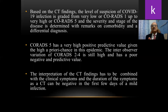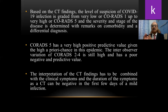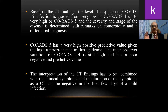Based on the CT findings, the level of suspicion of COVID-19 infection is graded from very low as seen in CORADS 1 up to very high in CORADS 5. CORADS 5 has a very high positive predictive index and CORADS 1 is almost negative except in a few exceptions. It is mostly CORADS 2, 3, and 4 which have a lot of inter-observer variation and a poor negative predictive value.